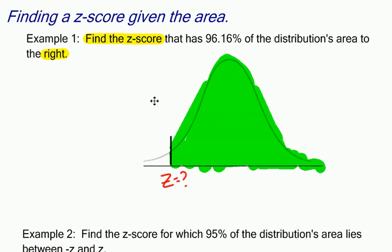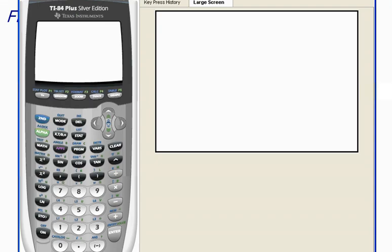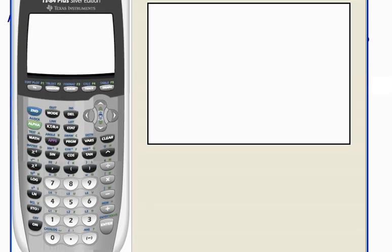Well, there's different methods that you could use, and you could always use a table and try to figure out what the z-score is, but I'm going to show you how to do it on your graphing calculator.